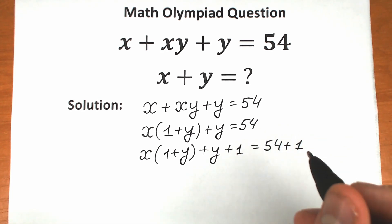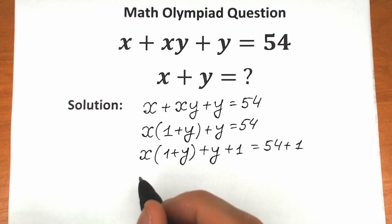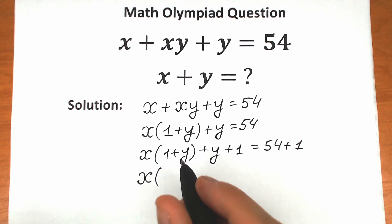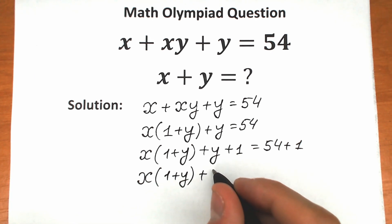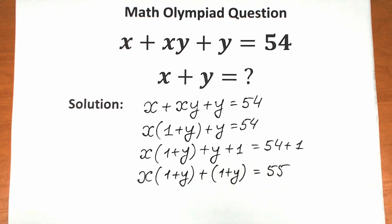Why do I do this? Because if you look closely, we will have y plus 1, absolutely the same expression as here. Let's write it as 1 plus y. So we have x times 1 plus y, and plus here we can group as 1 plus y also, which equals 55.